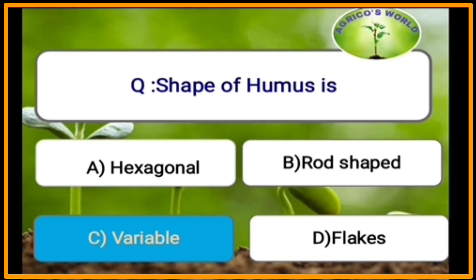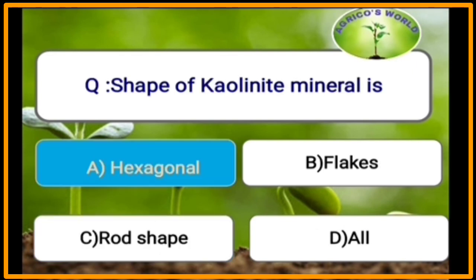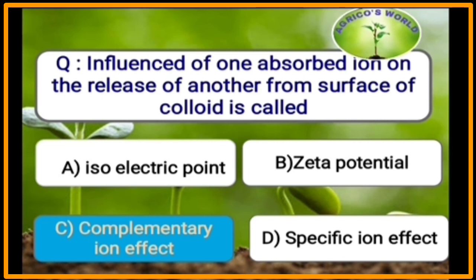The shape of humus is variable; humus is amorphous in nature. The shape of kaolinite mineral is hexagonal. The influence of one adsorbed ion on the release of another from the surface of a colloid is called the complementary ion effect.